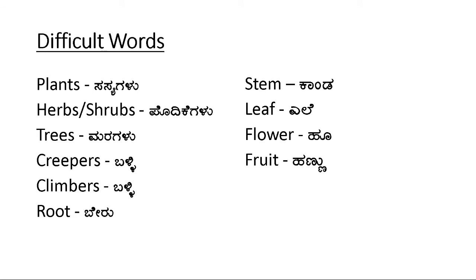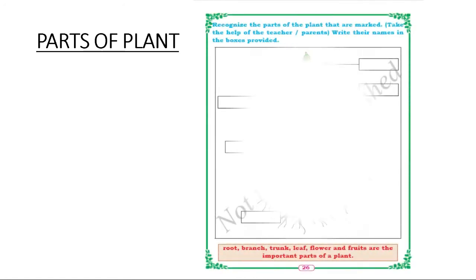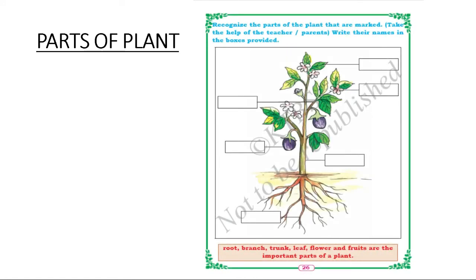Let us see parts of plant. In your textbook they have given you the diagram of a plant and they told you to recognize the parts of plant. Let us start from the bottom, this part is called root.